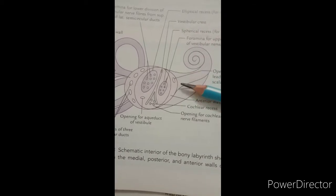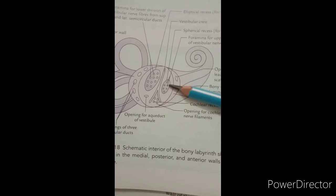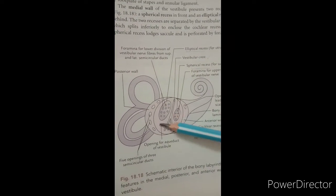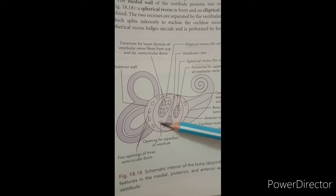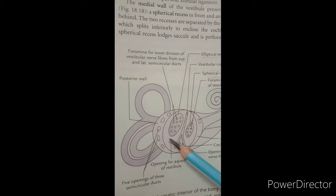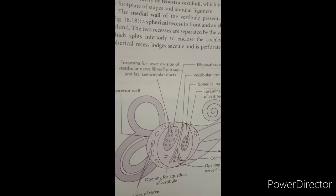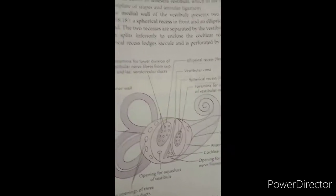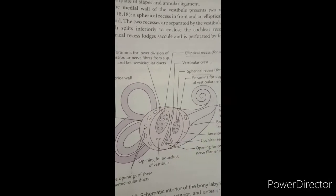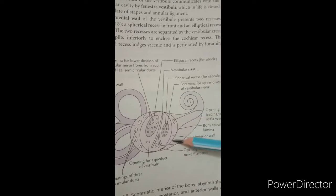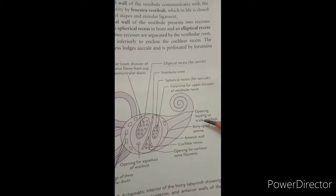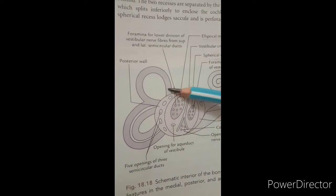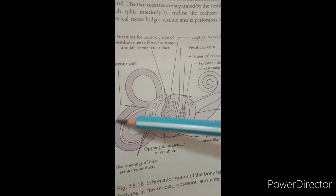The spherical recess lodges the saccule, and the elliptical recess lodges the utricle. Below the elliptical recess there is a small opening for the aqueduct of the vestibule, through which the ductus endolymphaticus — also called the endolymphatic sac or saccus endolymphaticus — passes out. The anterior wall of the vestibule shows an opening related to the scala vestibuli, and the posterior wall shows five openings for the three semicircular canals.